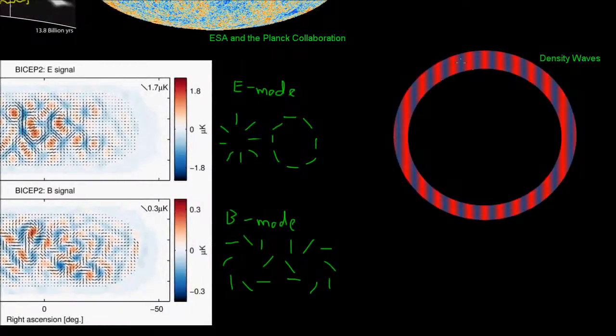So when the light that was bouncing around in the plasma was finally able to escape, that last scattered light was near these temperature anisotropies. And that means that they would get some kind of polarization associated with them. And it turns out that these density waves will only produce E modes in the CMB radiation.